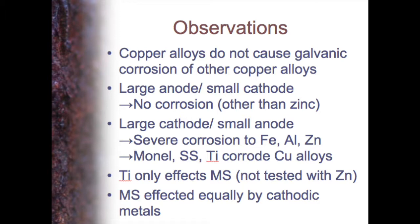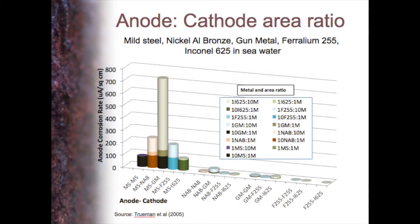However, if you have the reverse — a large cathode and a small anode — you will get very severe corrosion on iron, aluminium, and zinc. You'll find problems with copper alloys when connected to more noble metals. Titanium is a very passive material and really only significantly affects mild steel. Mild steel was found to be affected equally by all cathodic metals with an unfavourable anode-to-cathode area ratio. Titanium generally had very little effect on most alloys studied other than on steel.